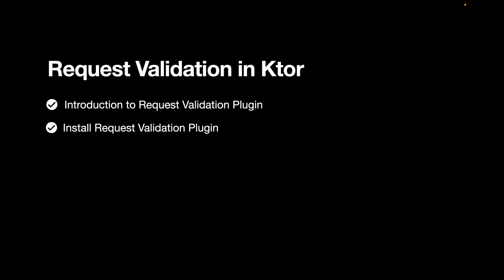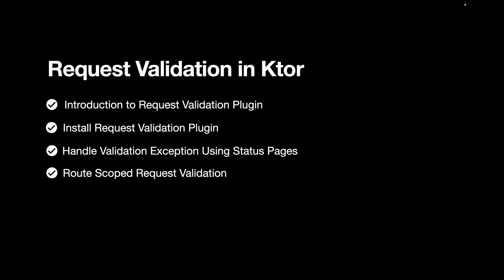Next we will set up the request validation plugin in our Ktor application — we will install and configure it. After that we will explore how to catch validation exceptions using the status pages plugin which we configured in the previous video. Finally we will learn how to scope the request validation to specific routes.